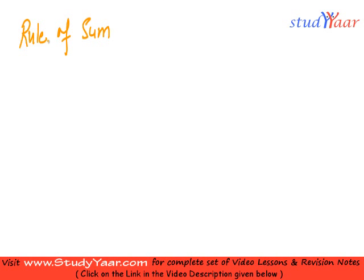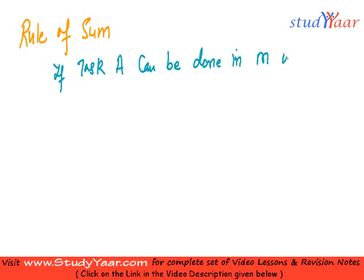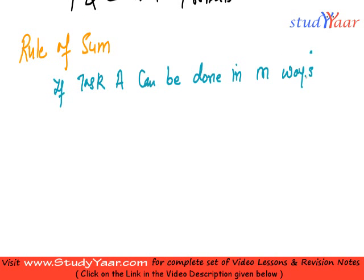The rule of sum and the rule of product are just the fundamental principles of counting. The rule of sum says: if task A can be done in m ways, and task B can be done in n ways,